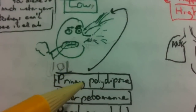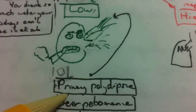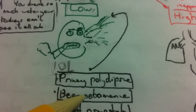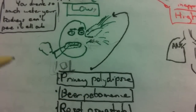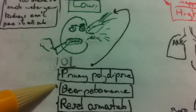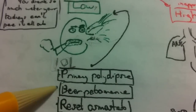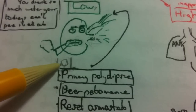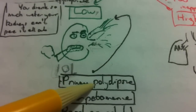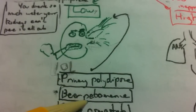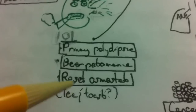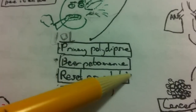What can cause this? Primary polydipsia — somebody psychogenically drinking tons and tons of water. Beer potomania: beer is mostly free water, and alcoholics tend not to have the best diets, so they're not getting salt either — essentially like primary polydipsia. The moral of the story: put salt in your beer; not only does it taste better, but it'll prevent beer potomania. You can also have a reset osmostat.